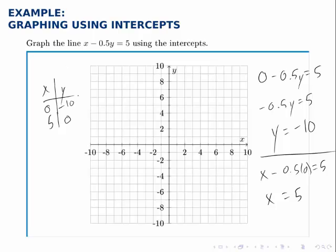In any case, all we need to do is plot these two points. So 0, negative 10 is down here, and 5, 0 is right here. Once we have those two, we can connect them to graph this line.